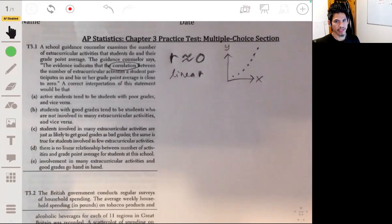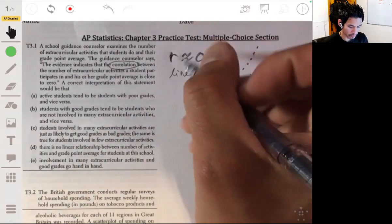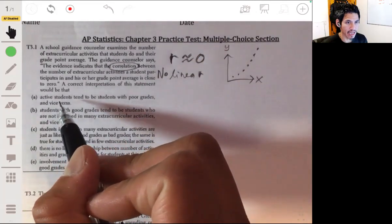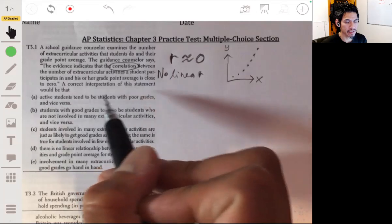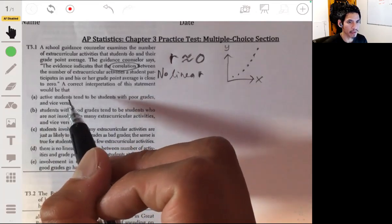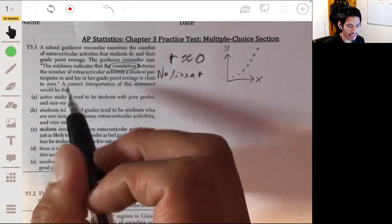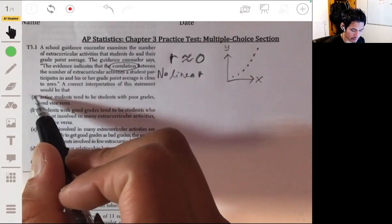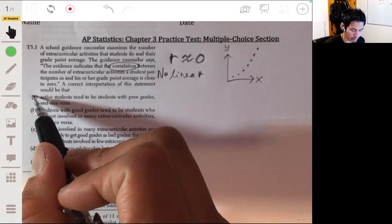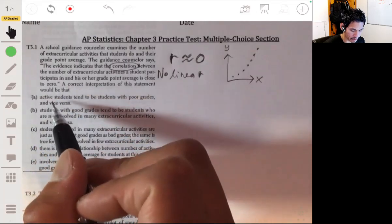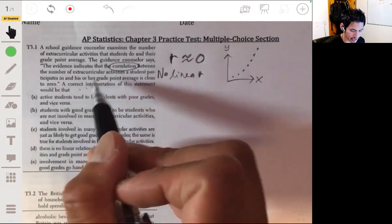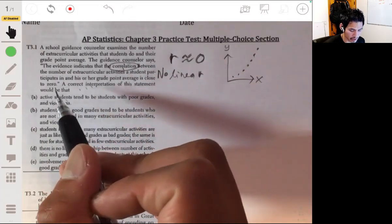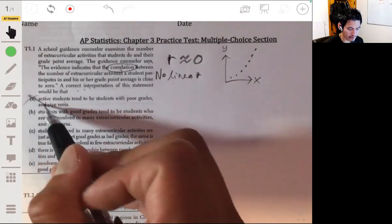So key thing: there's no linear relationship, or virtually none. Option A says active students tend to be students with poor grades and vice versa. No, we can't say that. This could be possible, but remember it's not asking if this is possible—it's asking what you can say from this information. If you have an r value about zero, can you say this? No, you can't say that for sure.